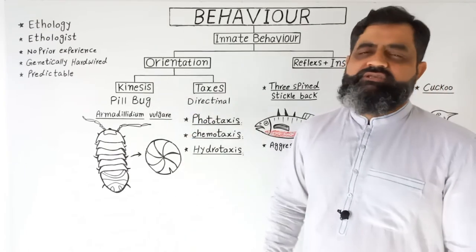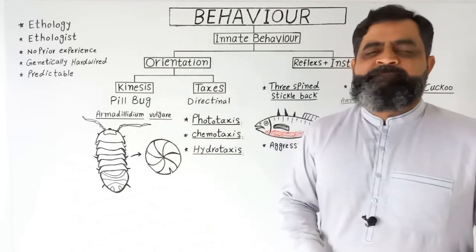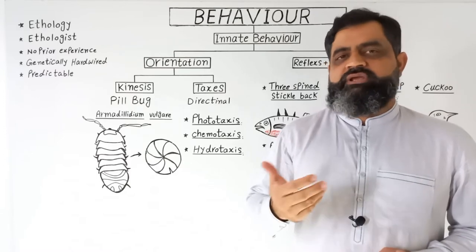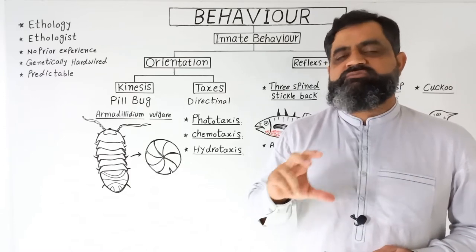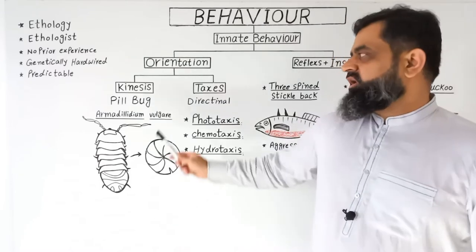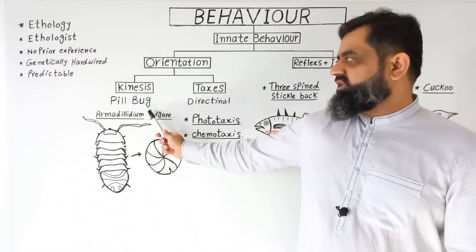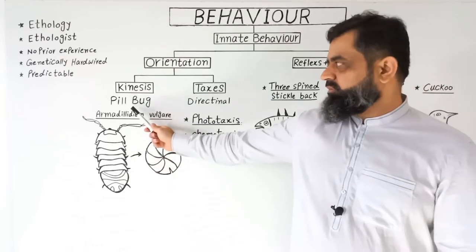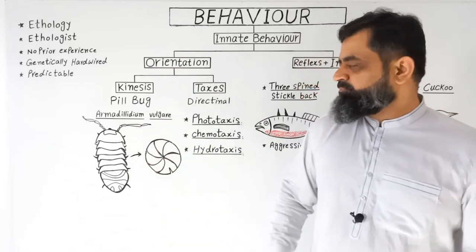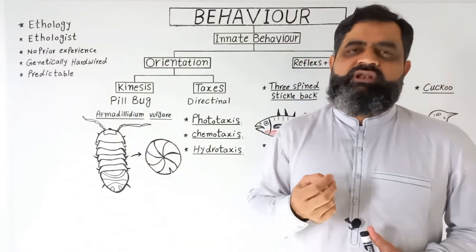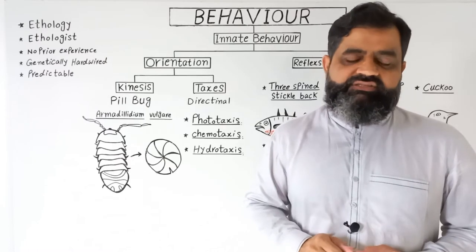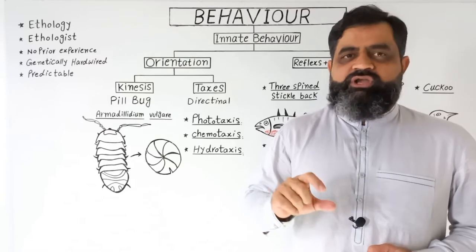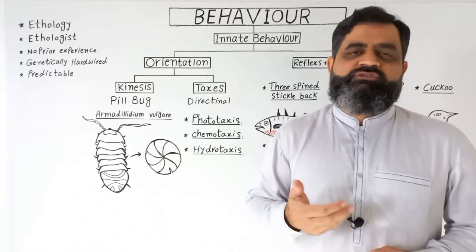The best example for kinesis is the pill bug. Kinesis is the locomotion of an animal from one place to another, but these movements are non-directional. The scientific name of the pill bug is Armadillidium vulgare. The body of the pill bug is drawn in the diagram here. These animals are land crustaceans that respire with the help of gills.